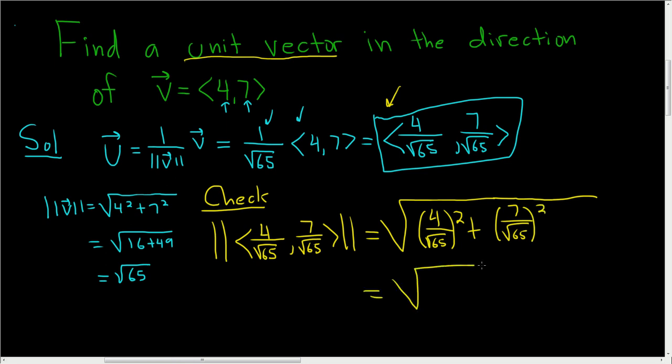So this is the square root, 4 squared is 16. When you square the square root it goes away, plus, and then 7 squared is 49.